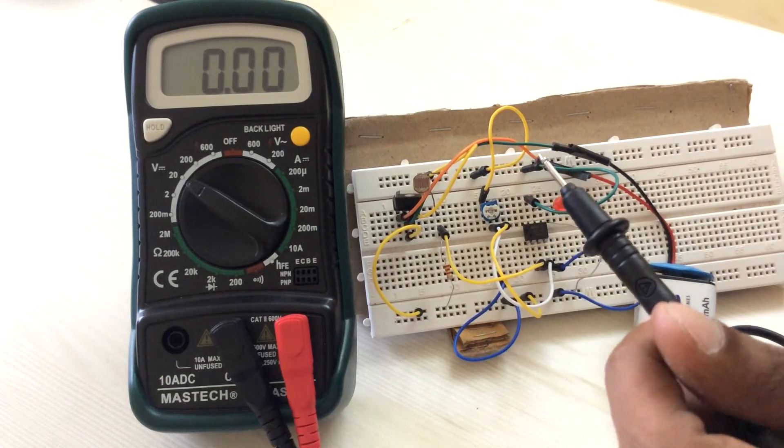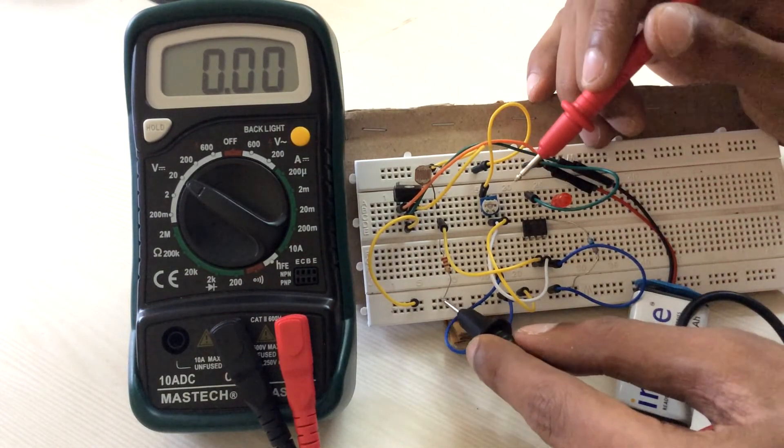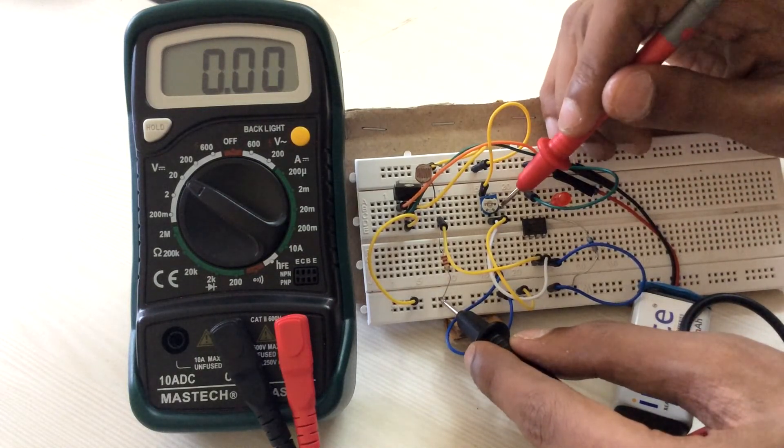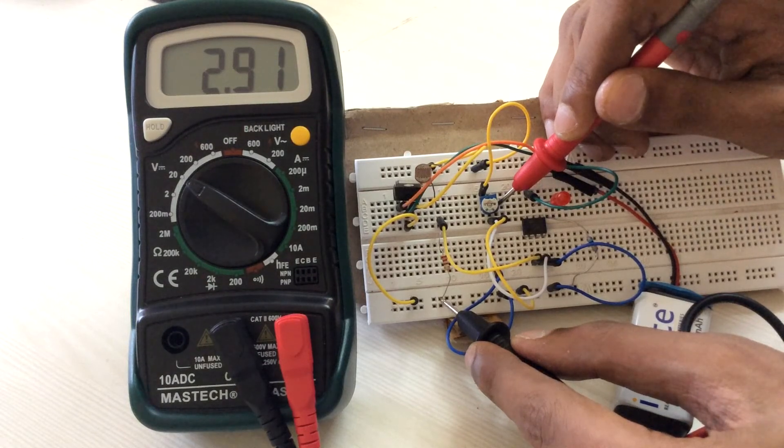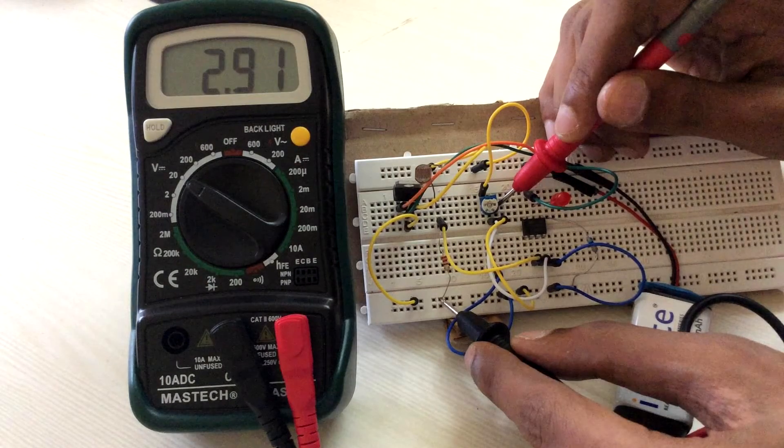Now connect the black terminal of the DMM to ground and the red terminal to the second pin of the potentiometer. If a voltage between 0 and 5 volts is shown, your potentiometer is working just fine. Make sure that this voltage is a little more than the voltage across the 2.2kohm resistor in darkness. If not, change the threshold of the potentiometer by turning its knob.